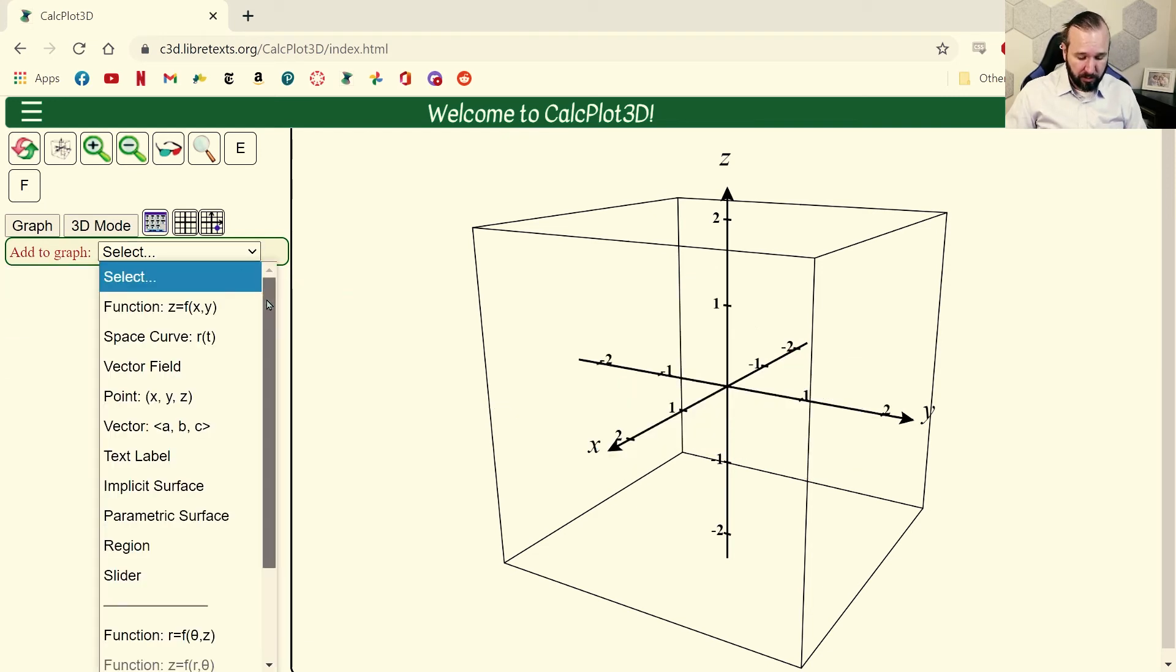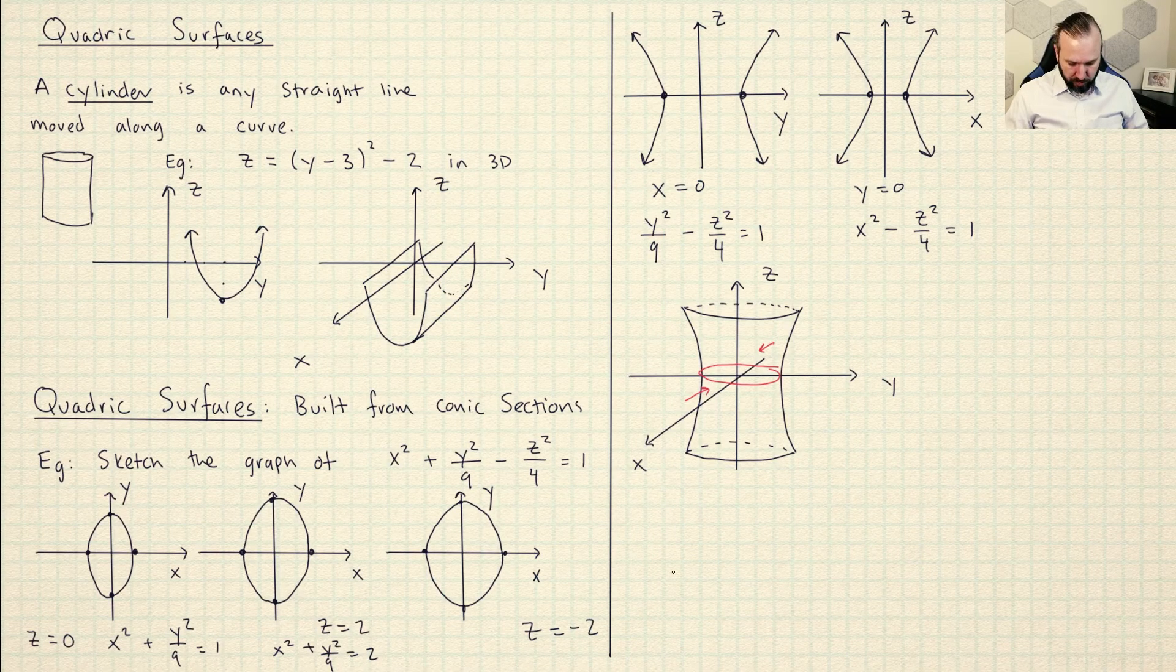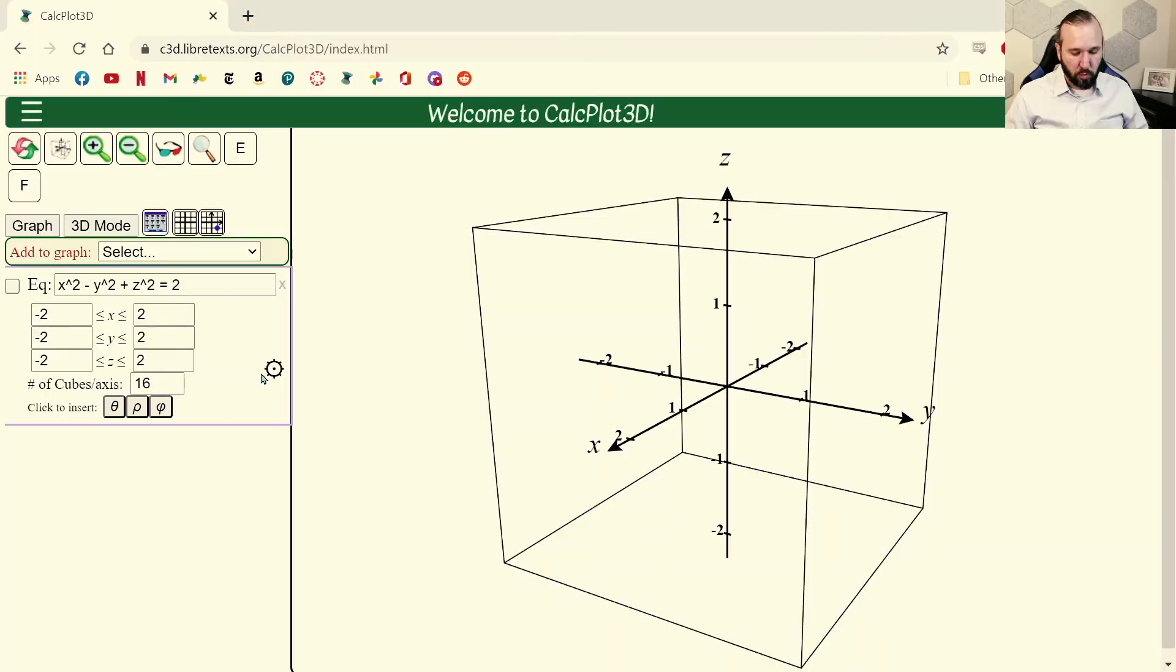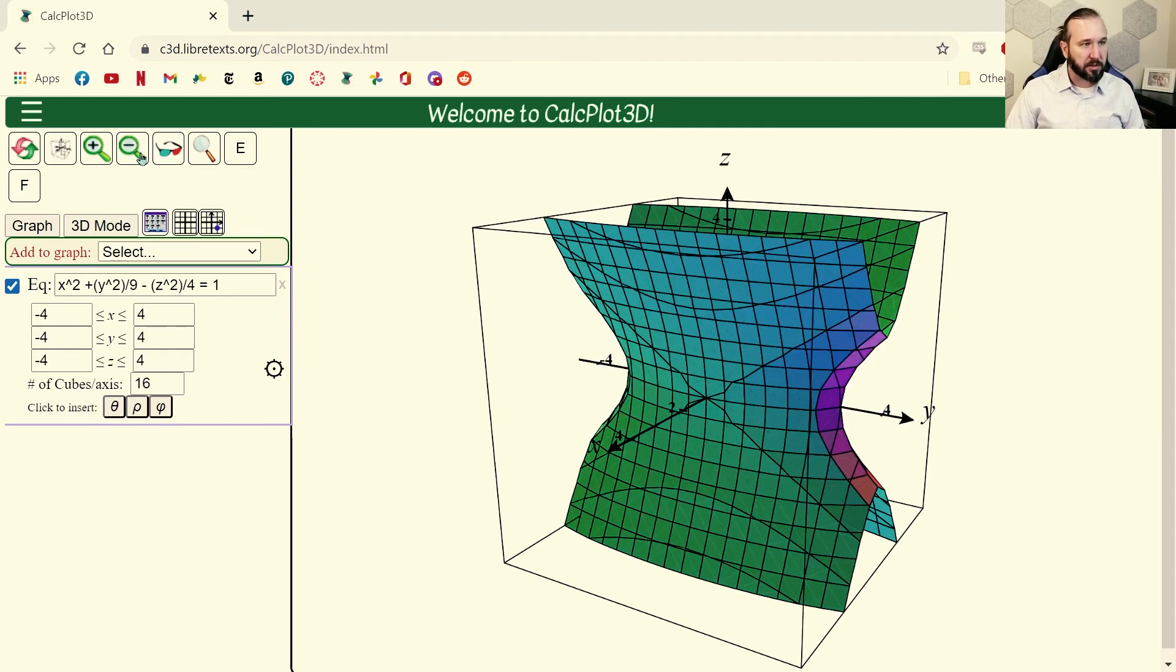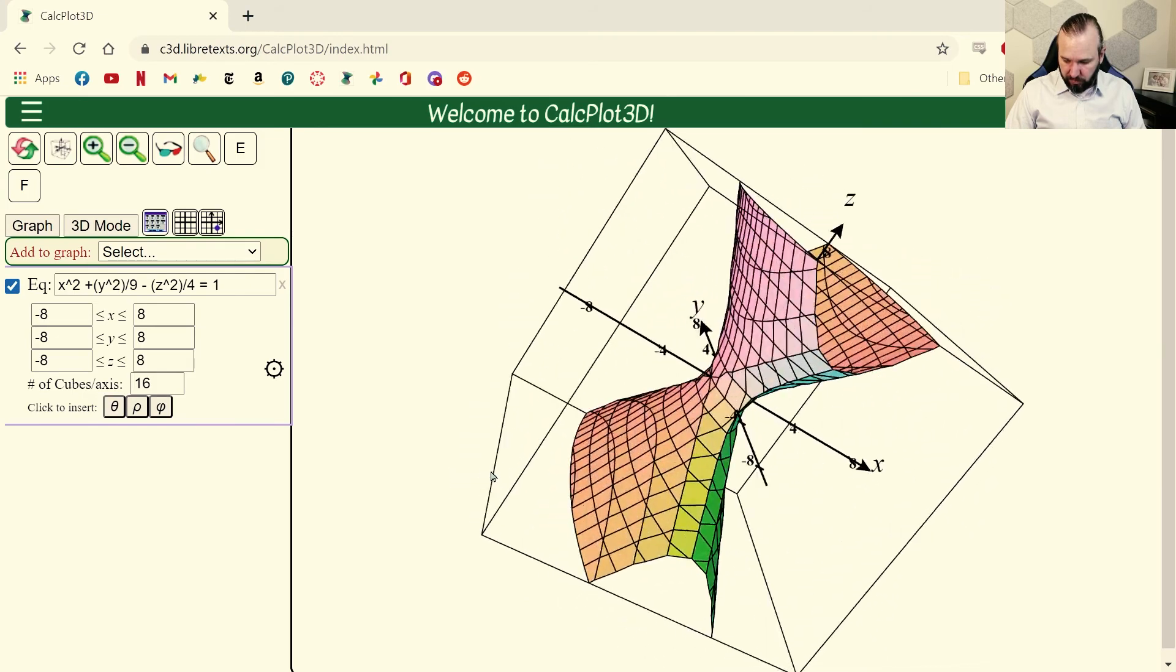So what we're going to do here is I'm going to input an implicit surface and then let's just go ahead and use the one from the example. So what did I do? X squared plus Y squared over 9 minus Z squared equals 1. Oh no, the problem is I'm too zoomed in. Okay, so let's here. I'm just going to click this minus button and zoom out. Okay, all right. So here we've got it.